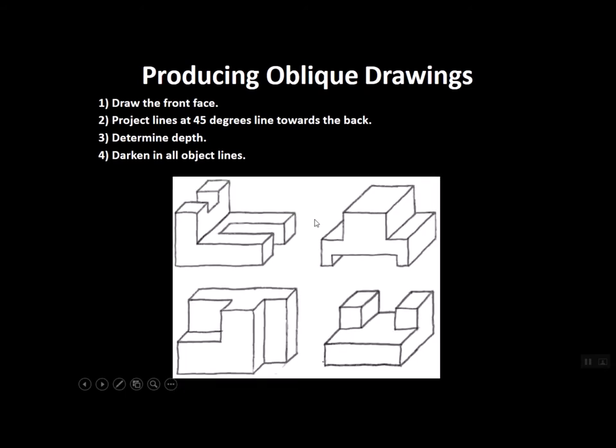Oblique is easy to draw. So any of the shapes that you wanted to take from what we've drawn already, if you wanted to oblique them, you just draw that front view. You go back at 45 degrees, and then we figure out how far back we want to go.